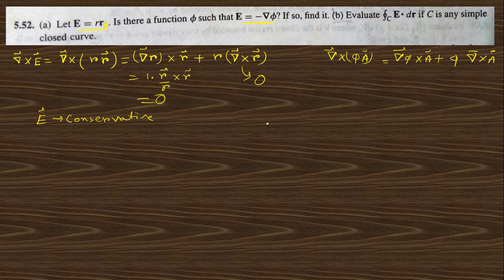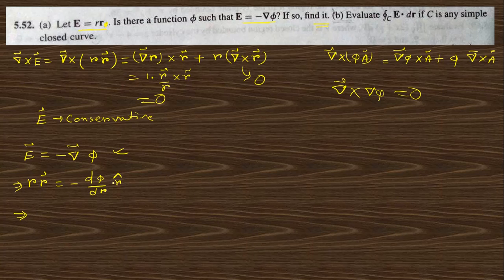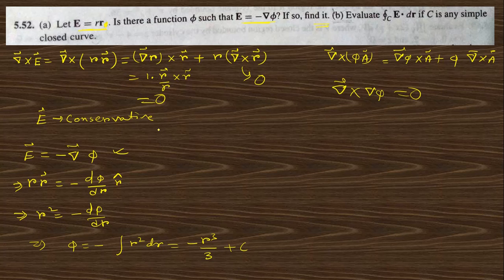Since E is conservative and curl of grad phi = 0, we can write E = -grad phi. To find phi, we compare: E = r·r vector = (d phi/dr) r cap. So r² = -d phi/dr, meaning phi = -integral of r² dr = -r³/3 plus some constant. This is the required function phi for part (a).